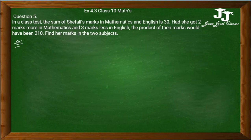In a class test, the sum of the marks in Mathematics and English is 30. Had she got two more marks in Mathematics and three less in English, the product of their marks would have been 210. Find the marks in the two subjects.